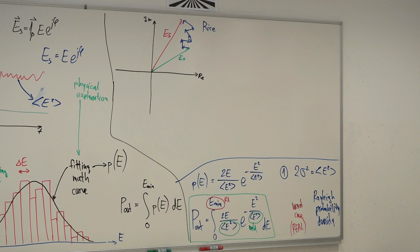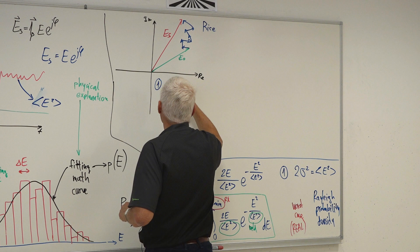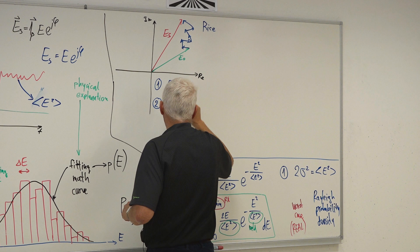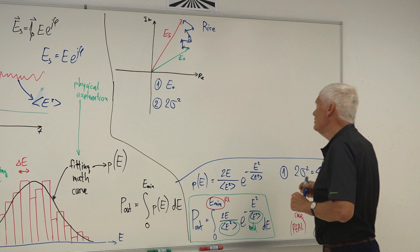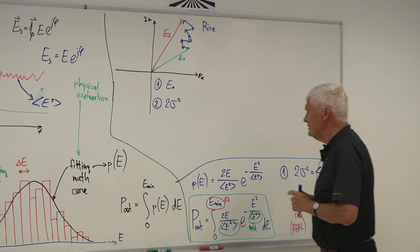Here, for the Rice distribution, we need two pieces of data: we need E0, the direct ray amplitude, and we need 2σ². We need two separate pieces of information because the direct component is much larger than the others, and it plays a different role in the probability density function.